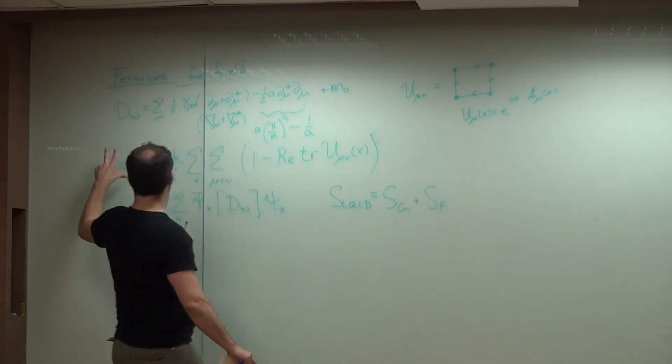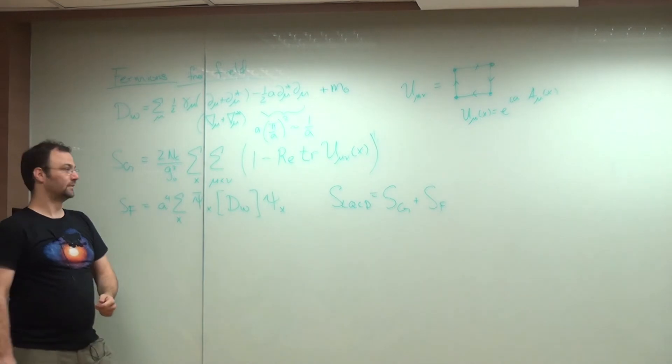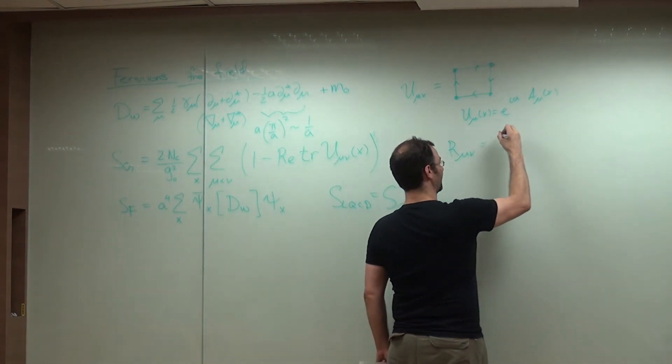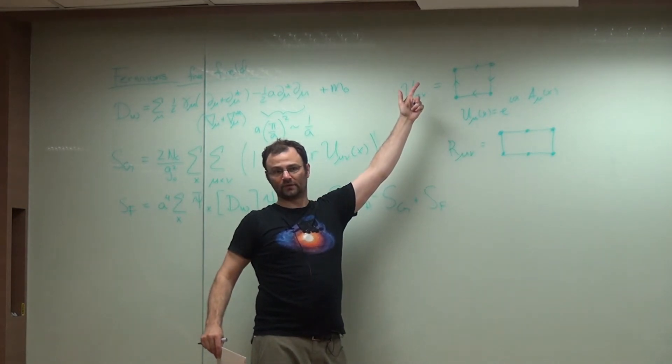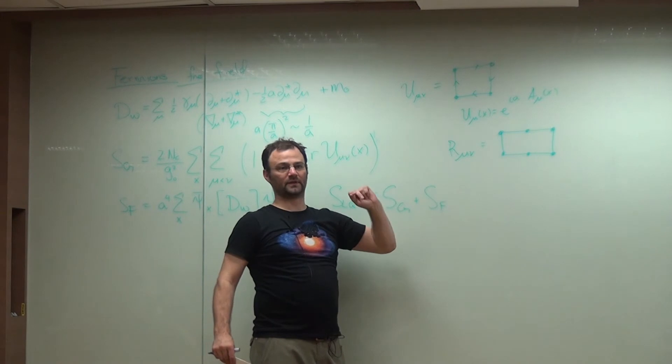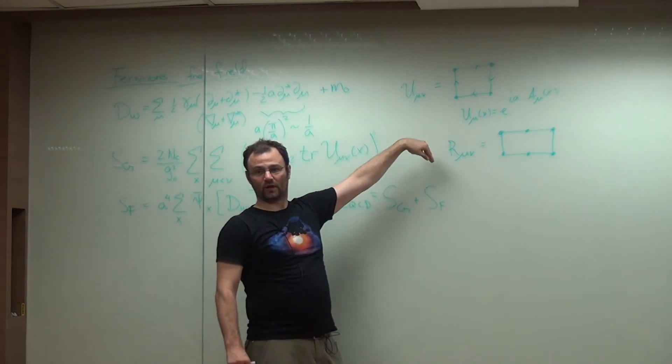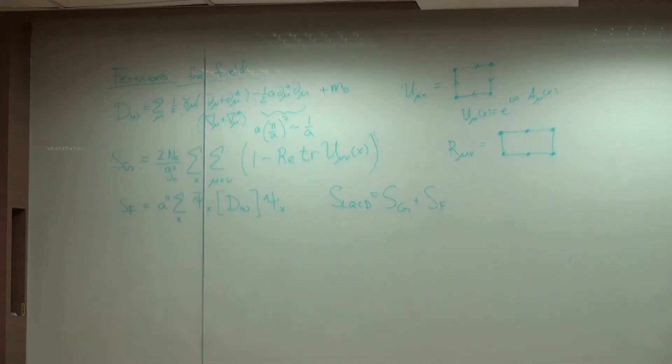Now another point I just want to make is this gluon action is not unique. You're allowed to use any gauge invariant operator. So for example, you could have instead used something you might call a rectangular plaquette. So you're free to use something like this instead of this plaquette. You're free to use both in some linear combination. The point is these will both produce for you QCD in the continuum with different discretization errors. And so in fact, there's a series of effort that goes into taking linear combinations of, for example, these two operators to minimize the discretization effects. That's called improved actions. Alright. Any questions about this? We're going to switch topics a little.